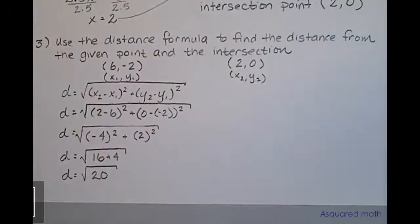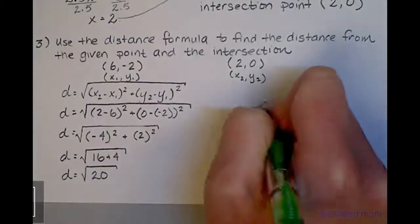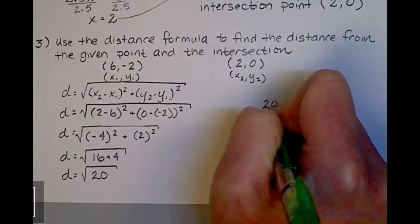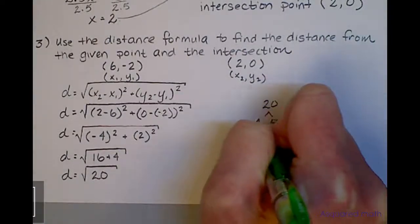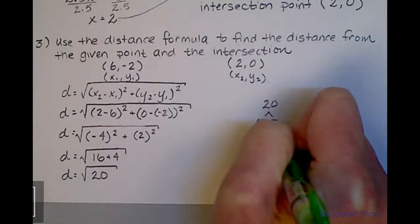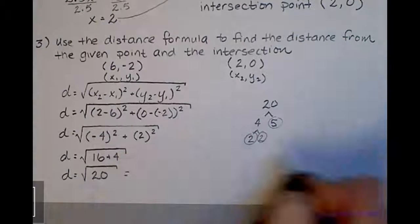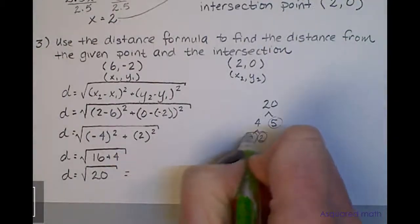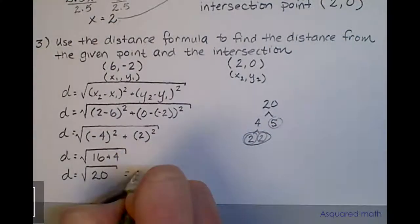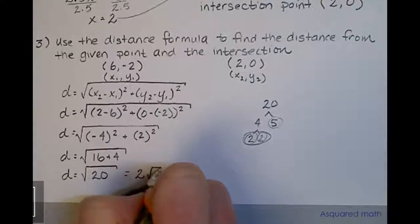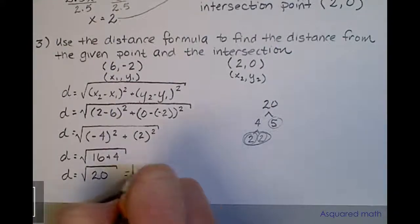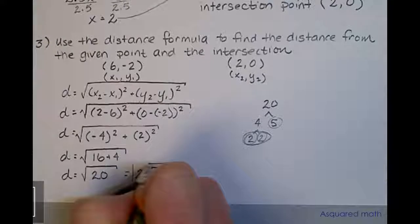The square root of 20 can be simplified. Break that 20 down into prime factors: 4 times 5, or 2 times 2 times 5. This simplifies down to 2√5 because anytime you have two of them you can bring it out in front. So your final distance is 2√5.